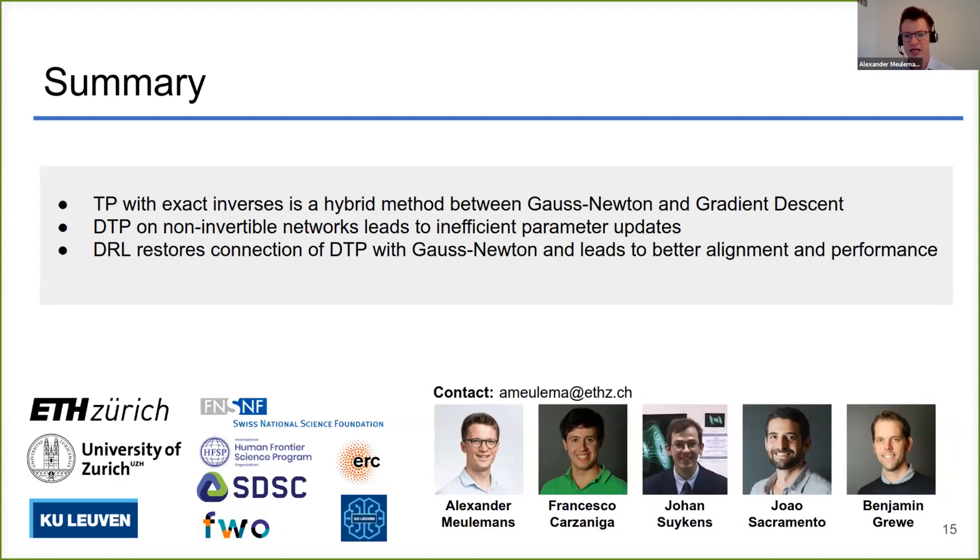So then this Gauss-Newton framework that I established is also a bit connected to minimal norm updates. Actually what you are doing in this target propagation is you compute the minimal norm update to push your output towards the targets that you provided at the output. If you would do this on your whole training set, this is a bit different from Gauss-Newton optimization and does not suffer from this attraction to saddle points.